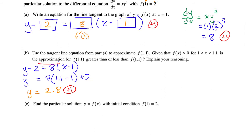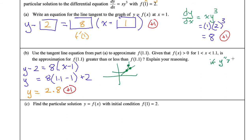We need to answer: is it greater or less than — an over-approximation or an under-approximation? The only thing we care about in this case is the second derivative, and the concavity. If y double prime is positive — concave up — then we have an under-approximation, because we guessed here and it should have been up there. If y double prime is greater than 0, then under-approximation. If y double prime is less than 0, then over-approximation.